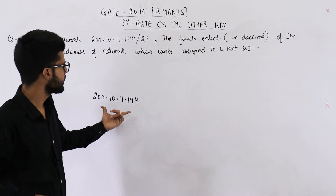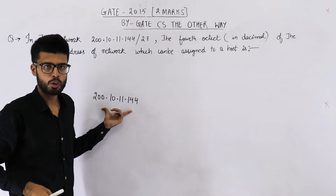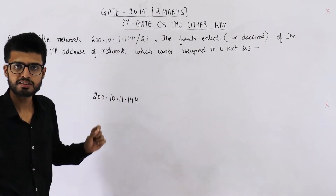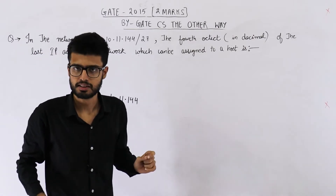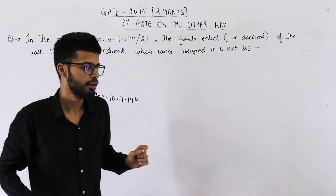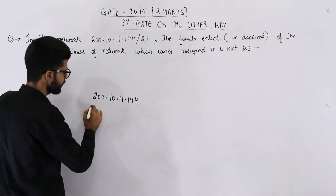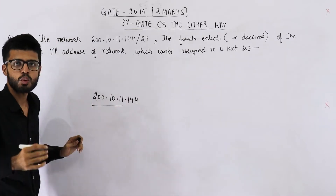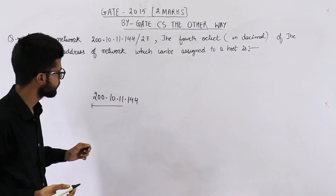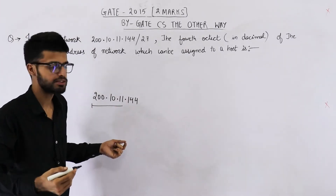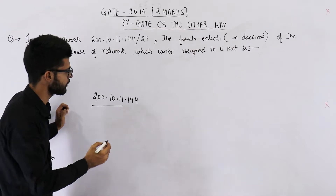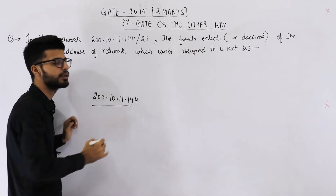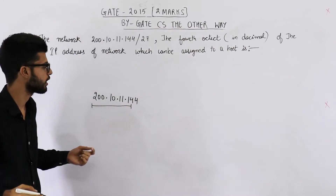So this is the network they're talking about. Slash 27 means the first 27 bits represent the network ID. Starting from the first bit, 3 octets means 24 bits. We still need 3 more bits to make 27, so from the 4th octet, the first 3 bits will represent the network ID.